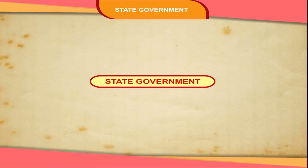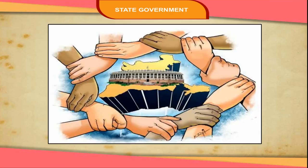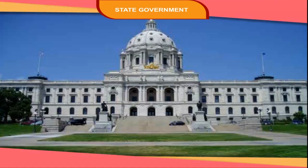India has a federal setup which means that we have two levels of government. One is meant for the entire country, called the central or union government, and the other works at the state level, called the state government.